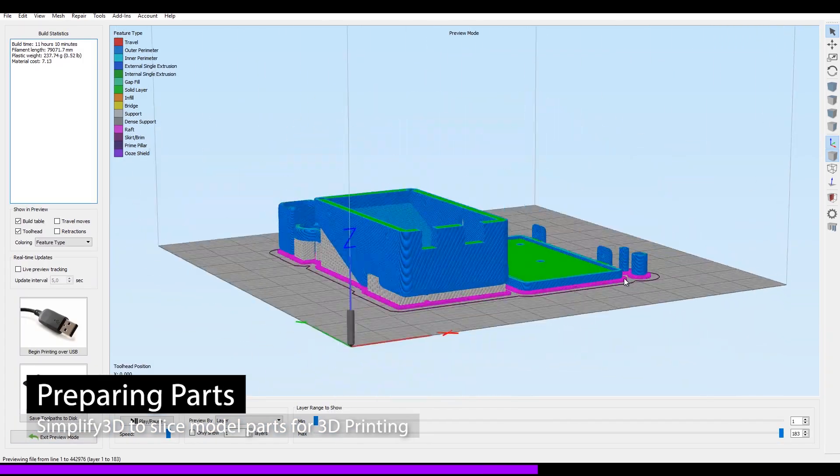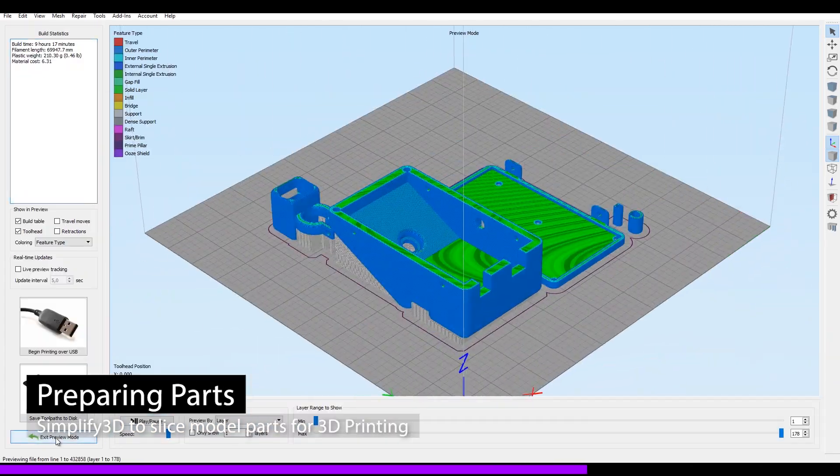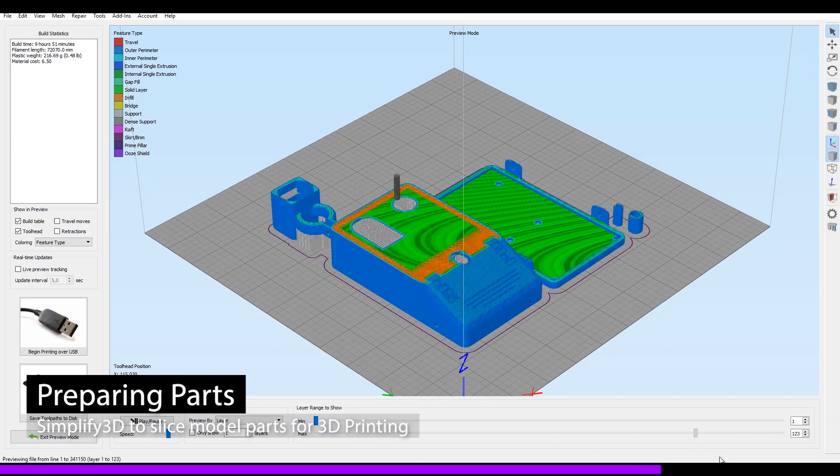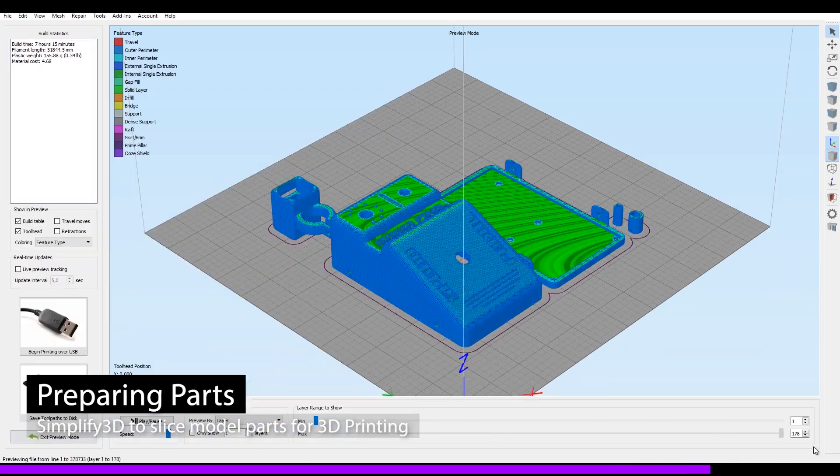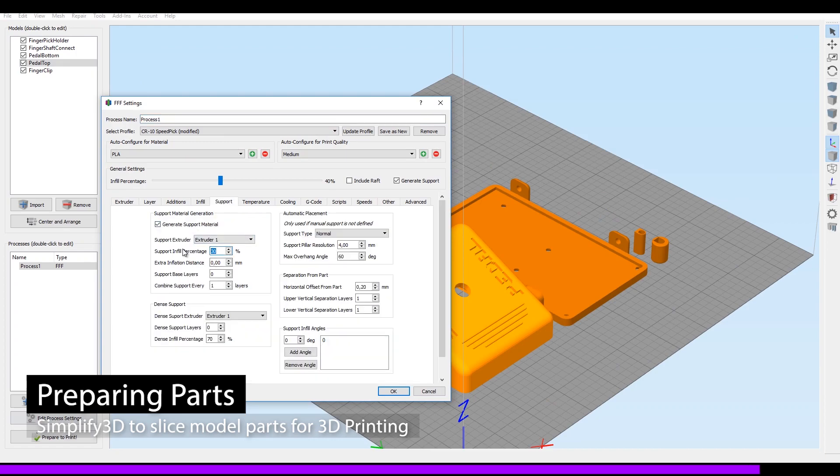My settings file is linked in the description below. Please make sure to adjust settings to match your printer. I am using a Creality CR10, so my print bed is 30cm by 30cm.